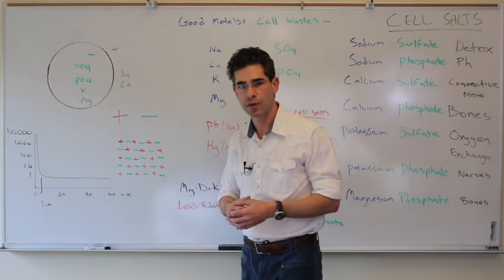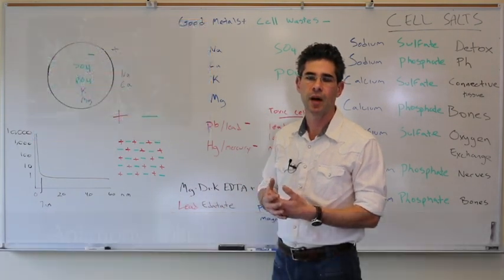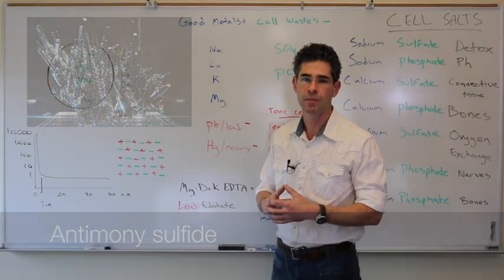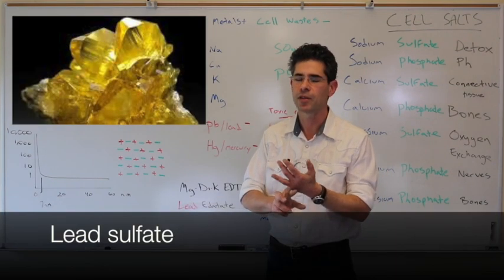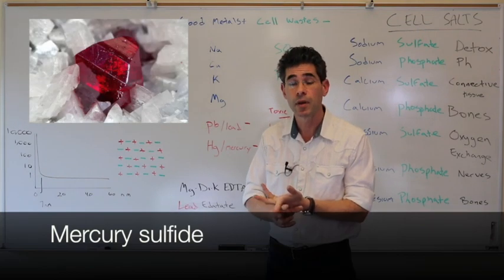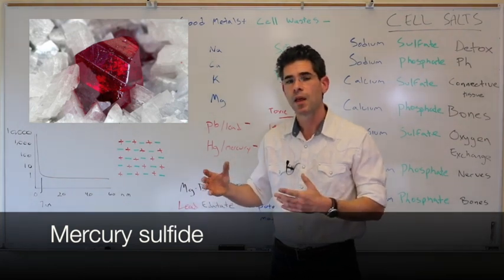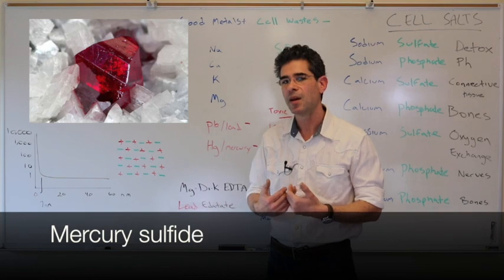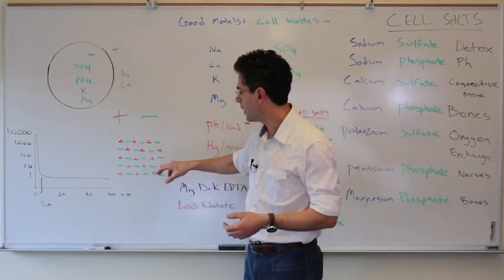Well, let me show you some pictures of them. Here are some photographs of different types of crystals. You can see lead combining with sulfate, lead combining with phosphate, mercury combining with sulfate. There's lots of these crystals. They're not going to get that big in our body, but it just shows you how this process forms.